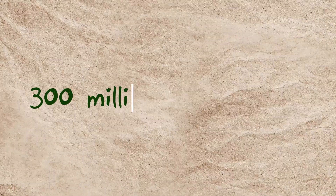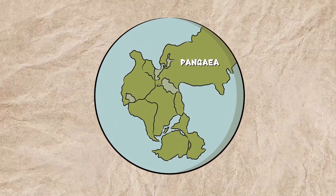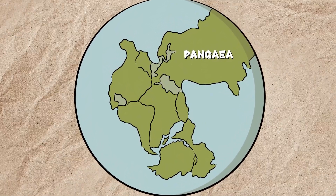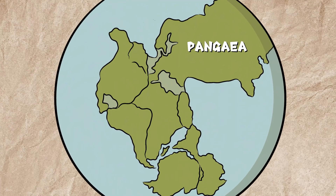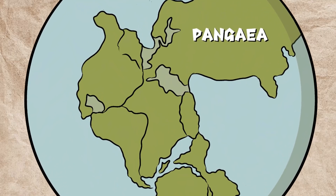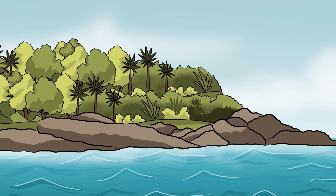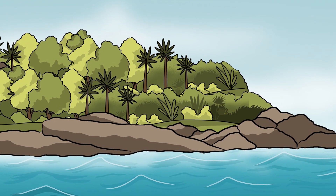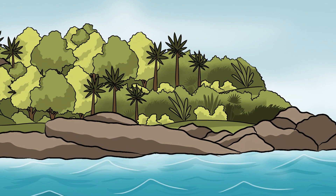Around 300 million years ago, Earth's landmasses were connected in a vast supercontinent known as Pangaea, which included what are now North and South America, Europe, Africa, and Asia. Oceans filled the spaces between these massive landmasses, shaping the coastlines we recognize today.